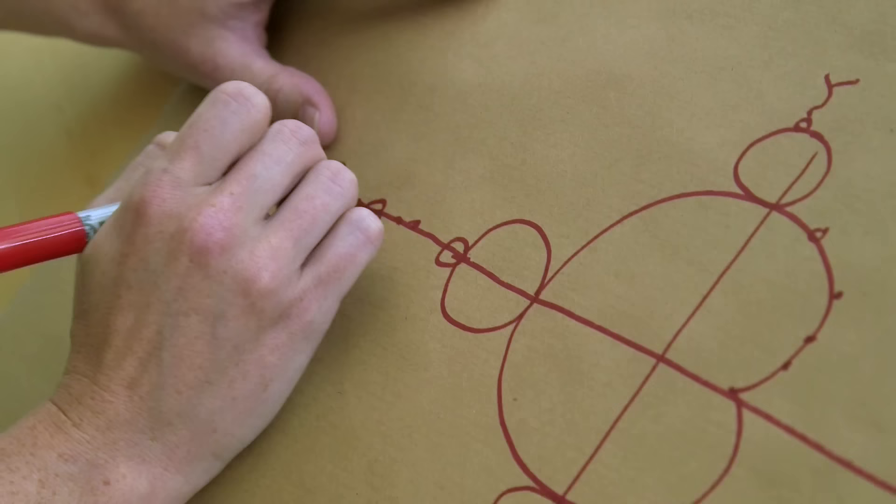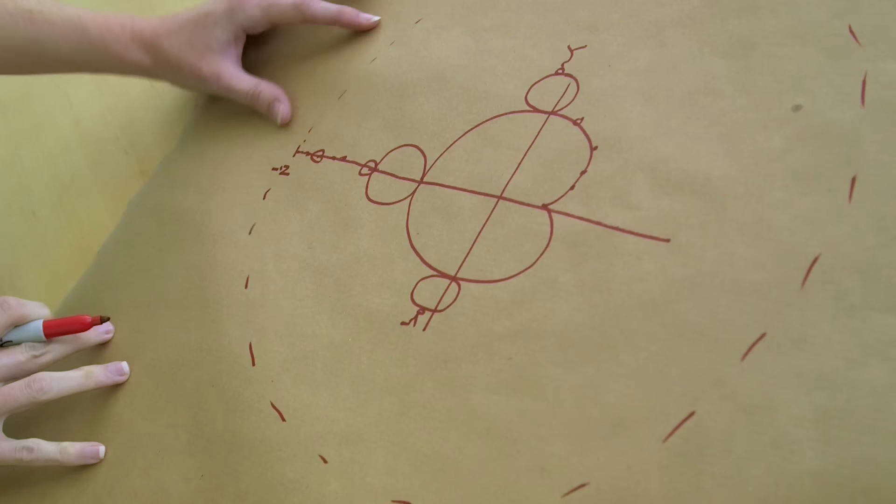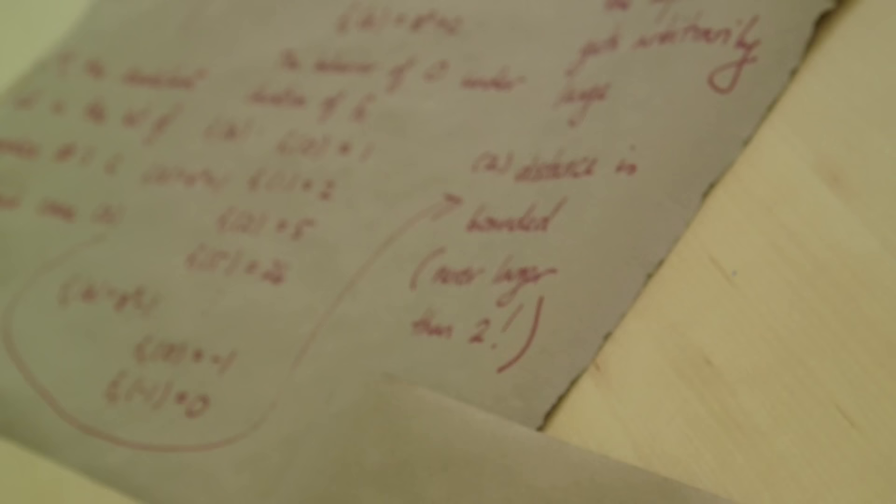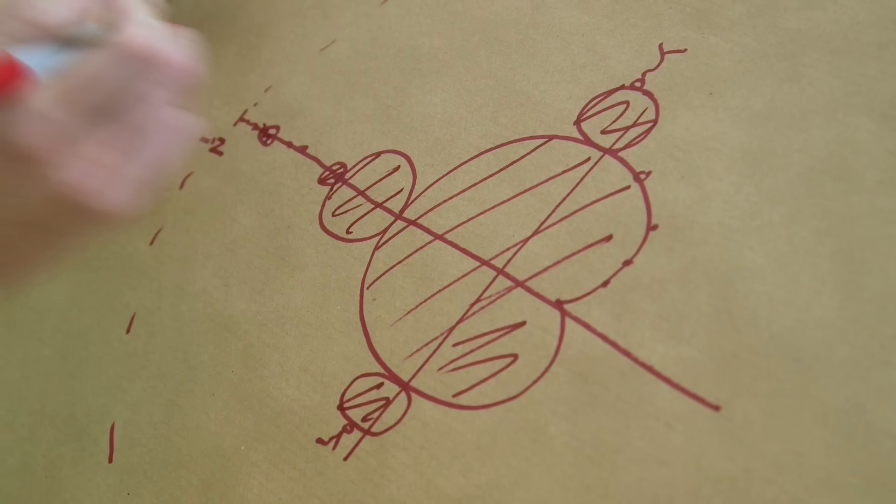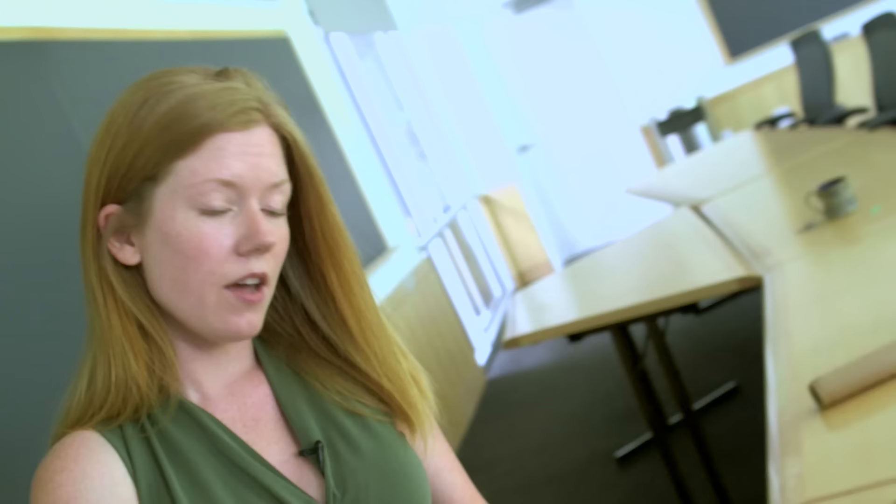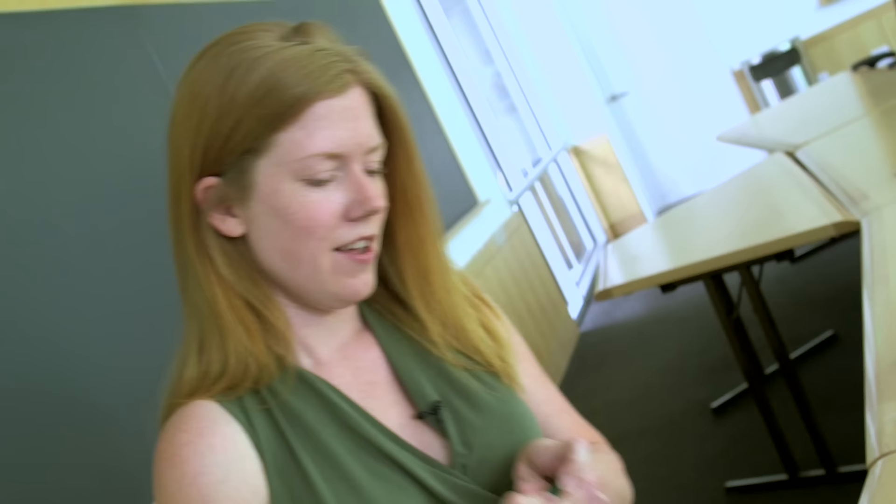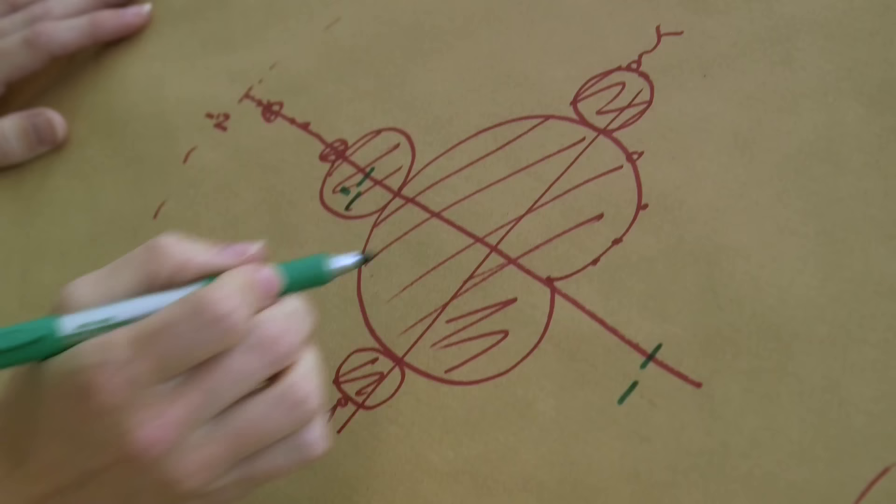I'll point out here that everything that's in the Mandelbrot set has to be within distance two of the center, because of exactly this case two thing that I said. Once your iterate is larger than two you're out of the picture. So the inside of this thing, let's fill this in here, this is what's known as the Mandelbrot set. Let's look at our examples. We had C equals one and we had C equals minus one.